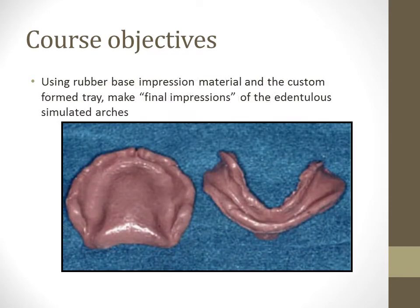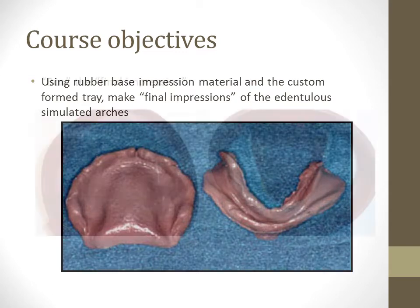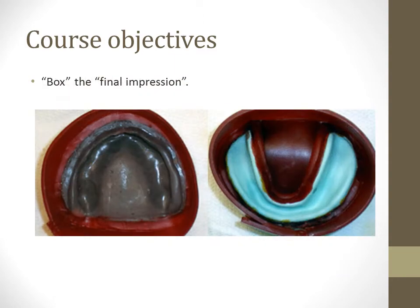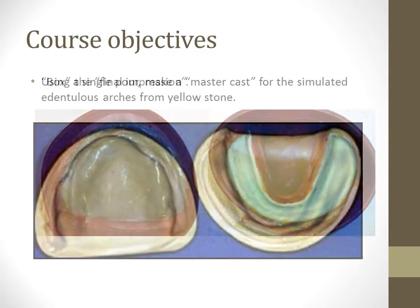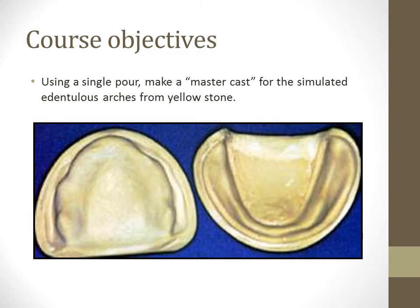Using rubber-based impression material and the custom-formed tray, make final impressions of the edentulous simulated arches. Box the final impressions. Using a single pour, make master casts for the simulated edentulous arches from Yellowstone.